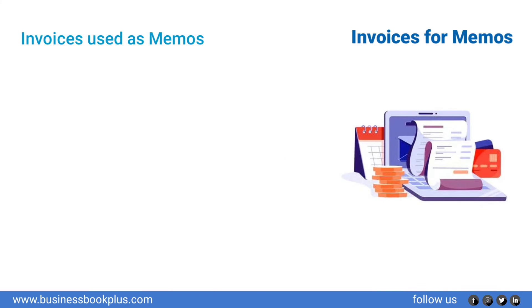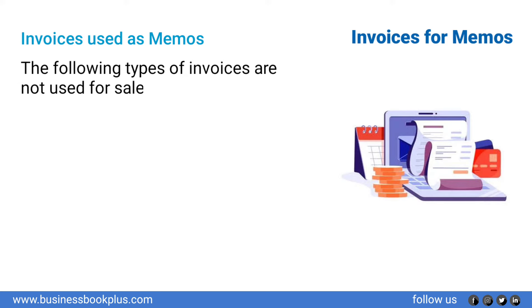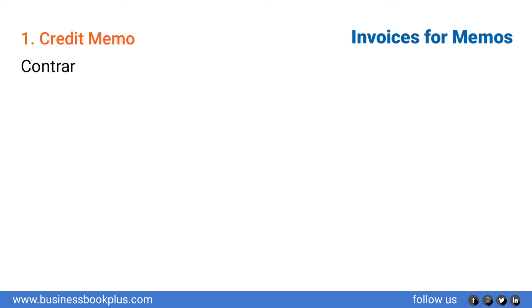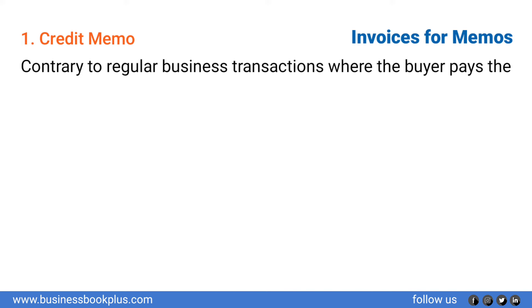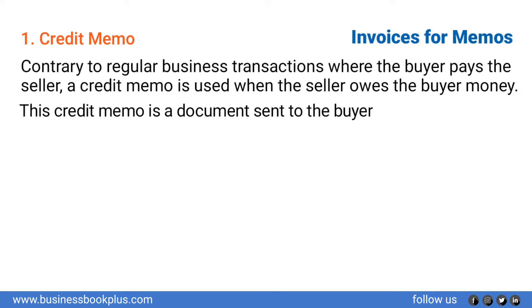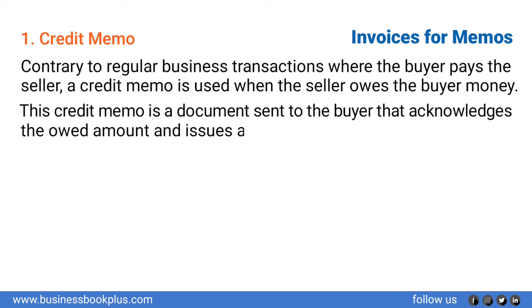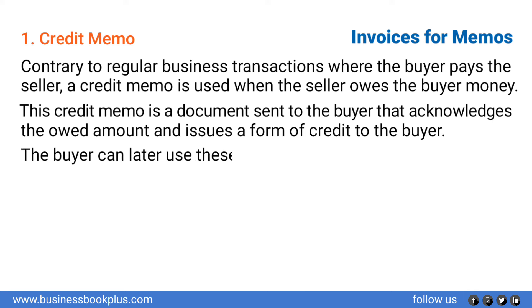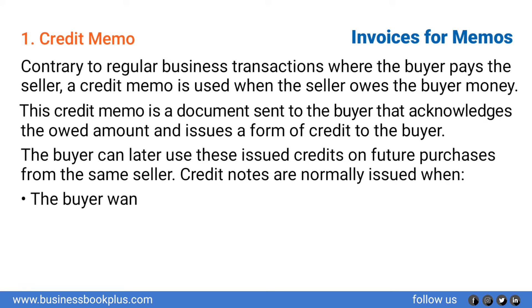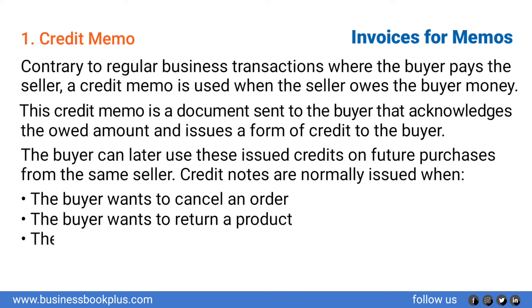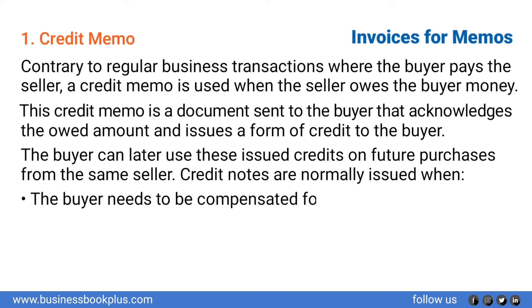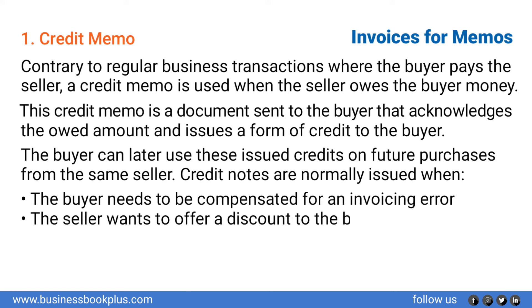Invoices used as memos: the following types of invoices are not used for sales but to make corrections to past transactions via credit and debit. Credit memo: contrary to regular business transactions where the buyer pays the seller, a credit memo is used when the seller owes the buyer money. It is a document sent to the buyer acknowledging the owed amount and issuing a form of credit. The buyer can later use these credits on future purchases. Credit notes are normally issued when the buyer wants to cancel an order, return a product, is not satisfied with a product or service, has received damaged products, needs compensation for an invoicing error, or the seller wants to offer a discount.